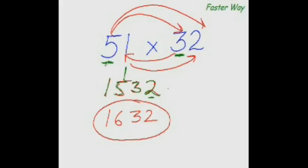Then multiply the first digit of this number again with the other digit of this number. But before you put that down, multiply this digit and this digit. So 5 times 2 is 10 and 3 times 1 is 3, and 10 plus 3 is 13. In the end, just multiply the last digits of both numbers to get the last digit of your answer — 1 times 2 is 2 — so the answer is 1632.